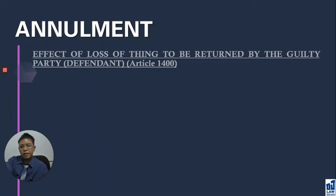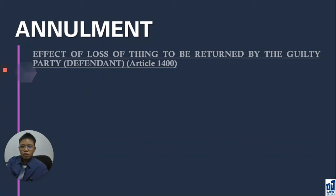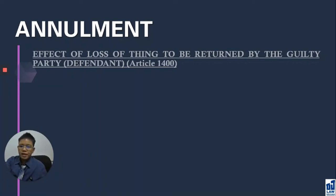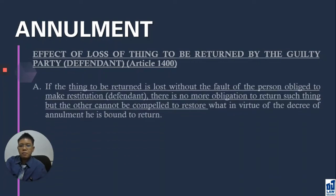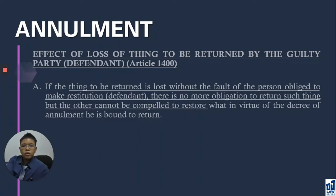After the swap, the minor attains legal age, asks for annulment, and there is a decree of mutual restitution. As the injured party, I have to return the gold necklace, and you as the guilty party have to return the gold bracelet. Now, what if the gold bracelet that the guilty party is supposed to return is lost? Loss here may occur in two ways: number one, loss occurs without the fault of the person obliged to make the restitution — the guilty party.